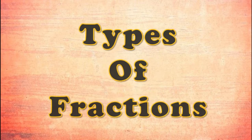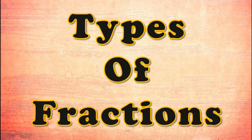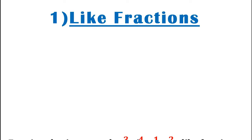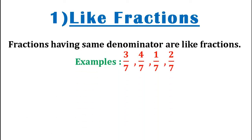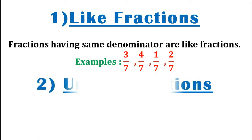Let us now learn about the different types of fractions. The first type are the like fractions. Fractions having the same denominator are known as like fractions. Examples: 3 by 7, 4 by 7, 1 by 7, and 2 by 7. All the fractions have the same denominator, that is 7. So all the fractions shown here are examples of like fractions.